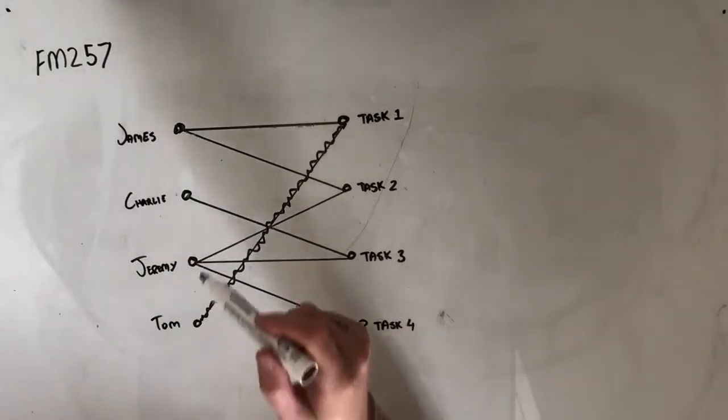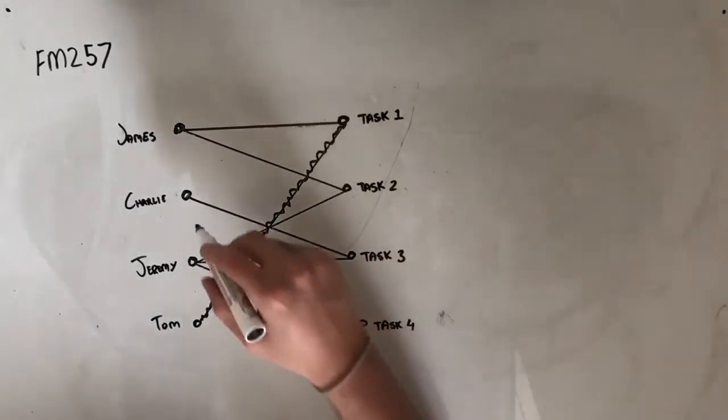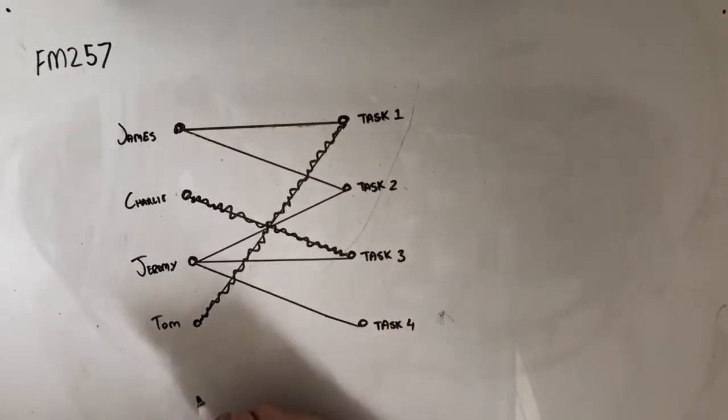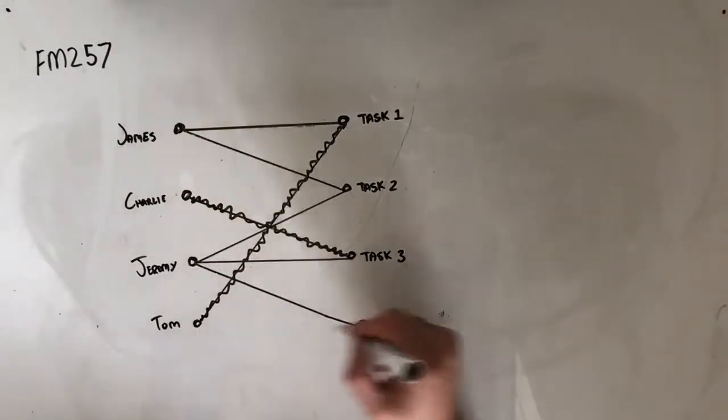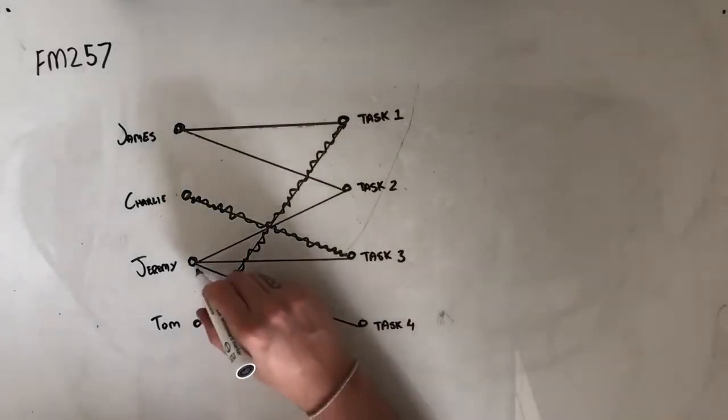The same can be said for Charlie. Charlie must do task three because that is the only task that he can do. And then Jeremy is the only person who can do task four, or can complete task four, so it must be allocated to him.